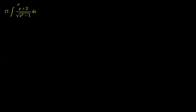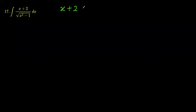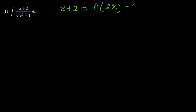This question has a linear function in the numerator and a quadratic in the denominator. Whenever we have linear over quadratic, we write the linear function — which is x plus 2 — as a times the derivative of the quadratic function in the denominator, which is x squared minus 1. The derivative of x squared minus 1 is 2x, so we write x plus 2 as a times 2x plus b.